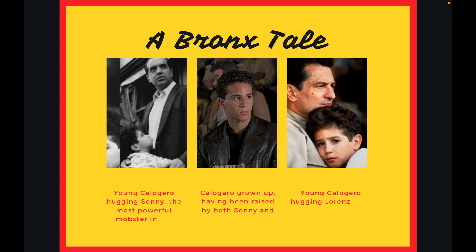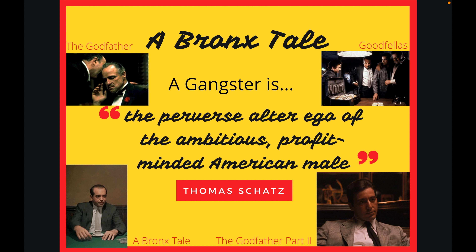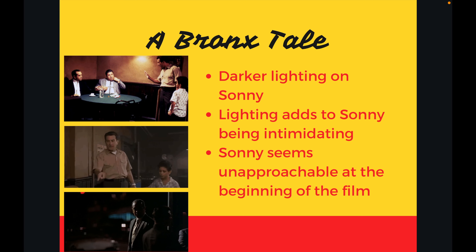Other gangster films depict Italian-Americans in a similar light. In the 1993 film A Bronx Tale, director Robert De Niro portrays his Italian-American characters through specific camera work and lighting, feeding into the norms of the gangster genre. A Bronx Tale tells the story of a young boy, Cologito, or C, growing up under the wing of the most infamous Italian-American in the neighborhood, Sonny, against his father's will. According to Robert Warshaw's piece The Gangster as Tragic Hero, gangster films adhere to the same dramatic patterns — gangsters are a persona of the imagination in an imaginary city where crime is often glorified. Thomas Schatz describes gangsters as the perverse alter ego of the ambitious, profit-minded American male, and explains that scenes typically take place in the shadowy nights of urban areas with exaggerated sounds of screeching tires and gunshots.